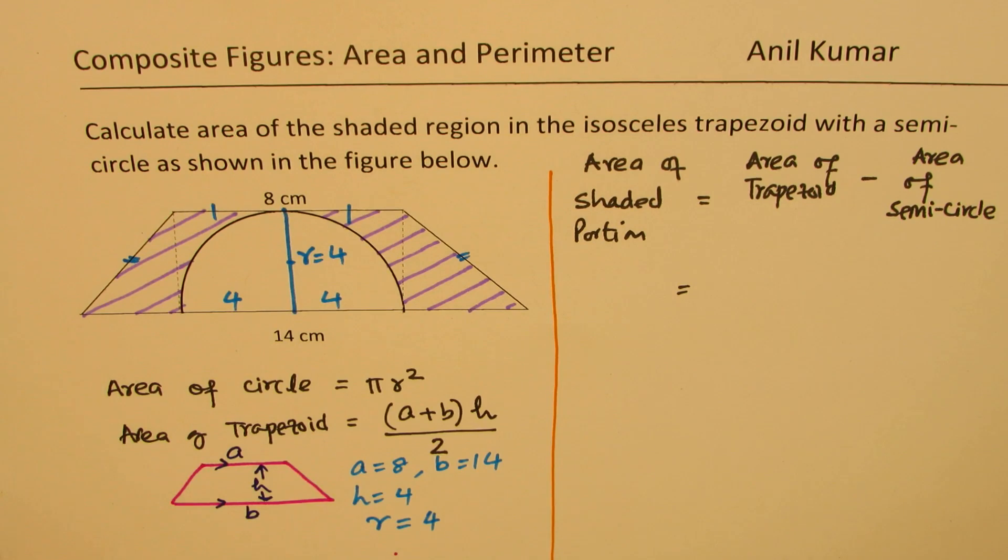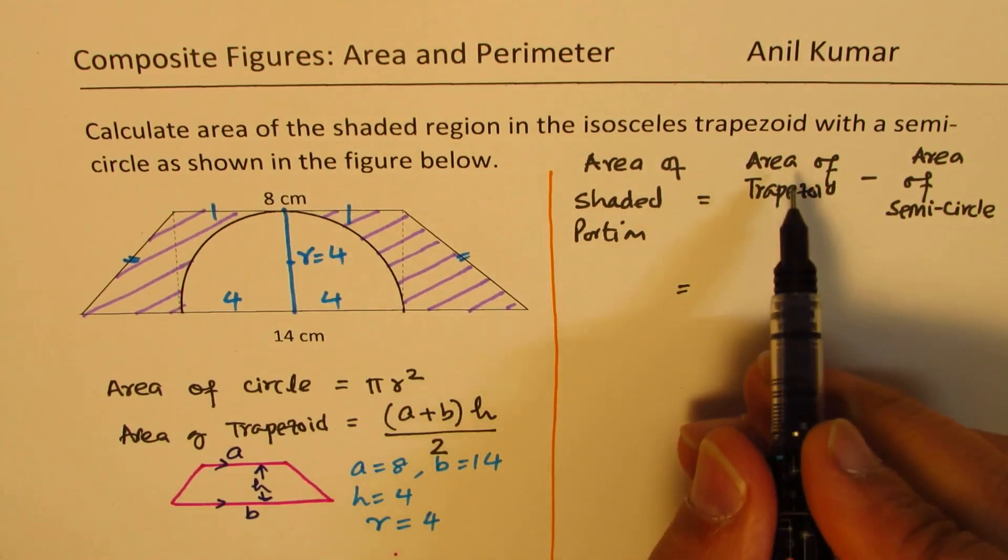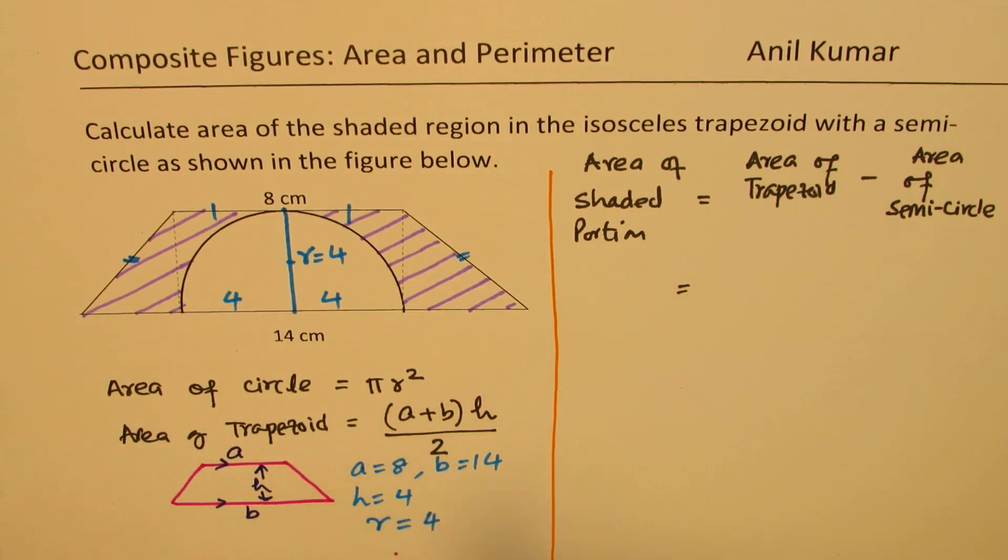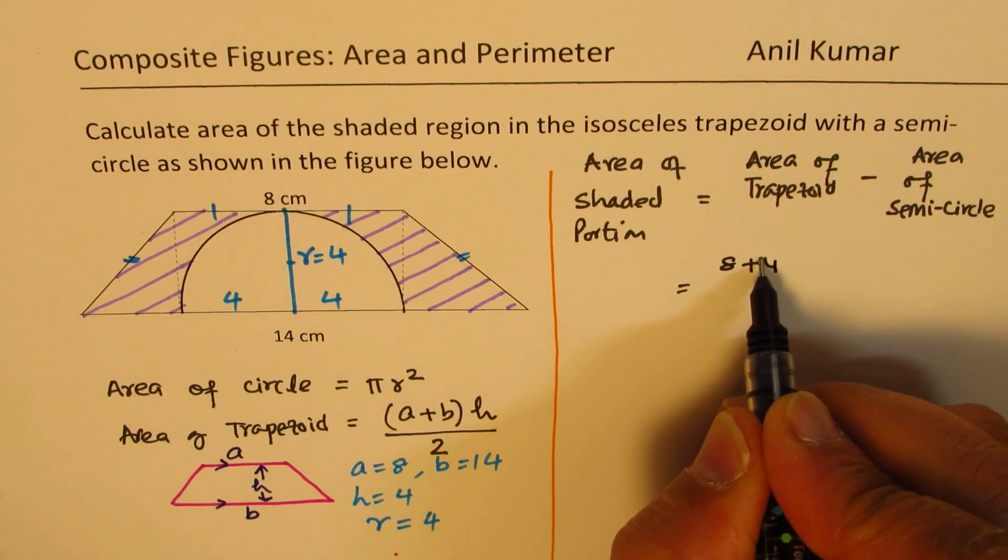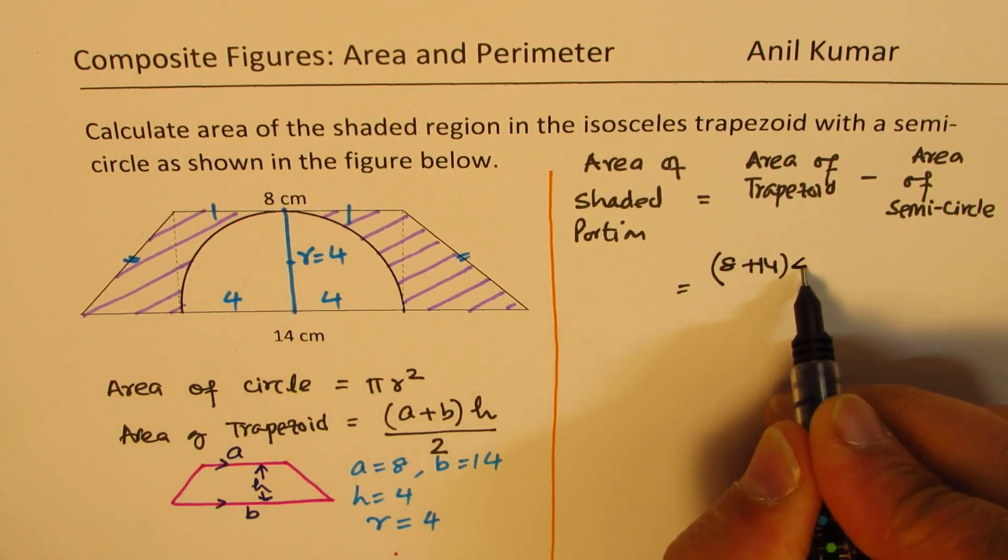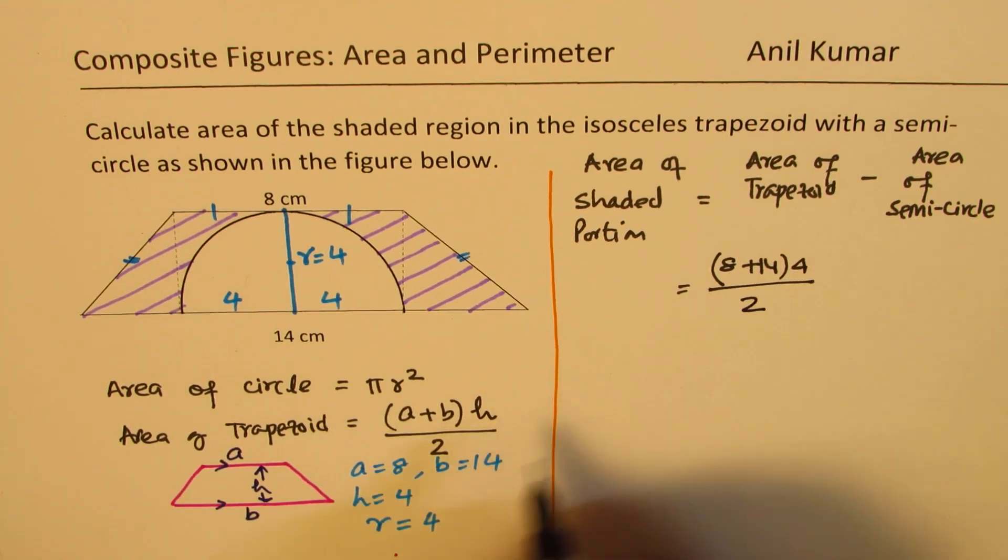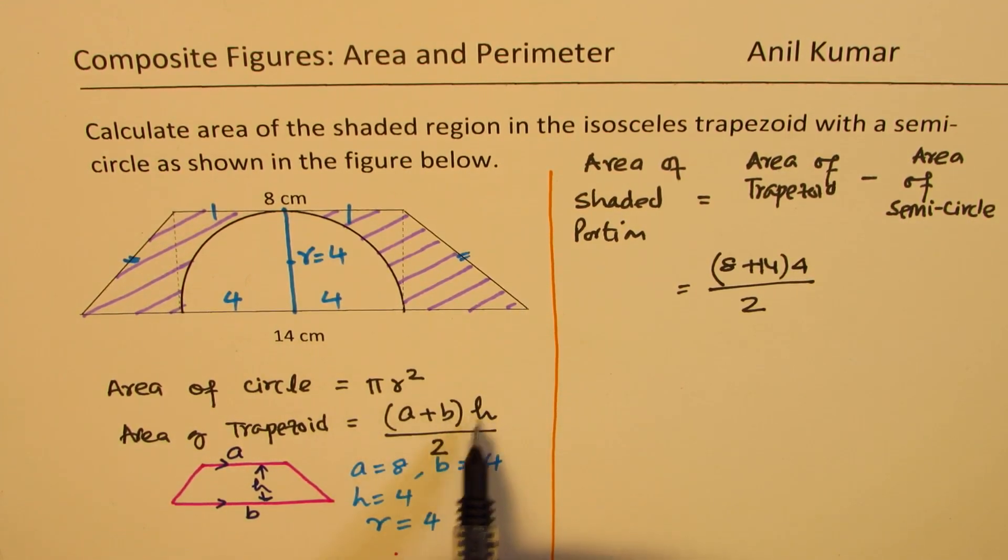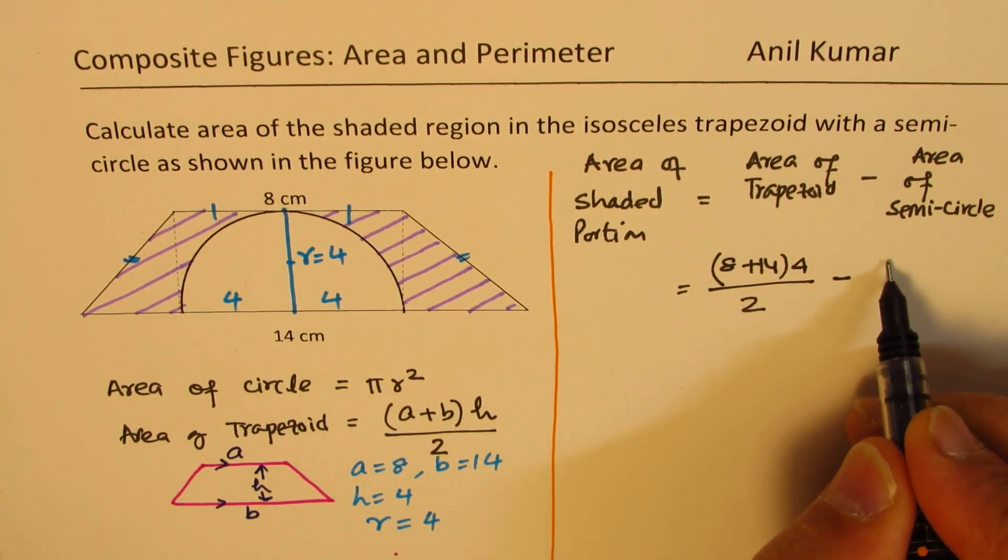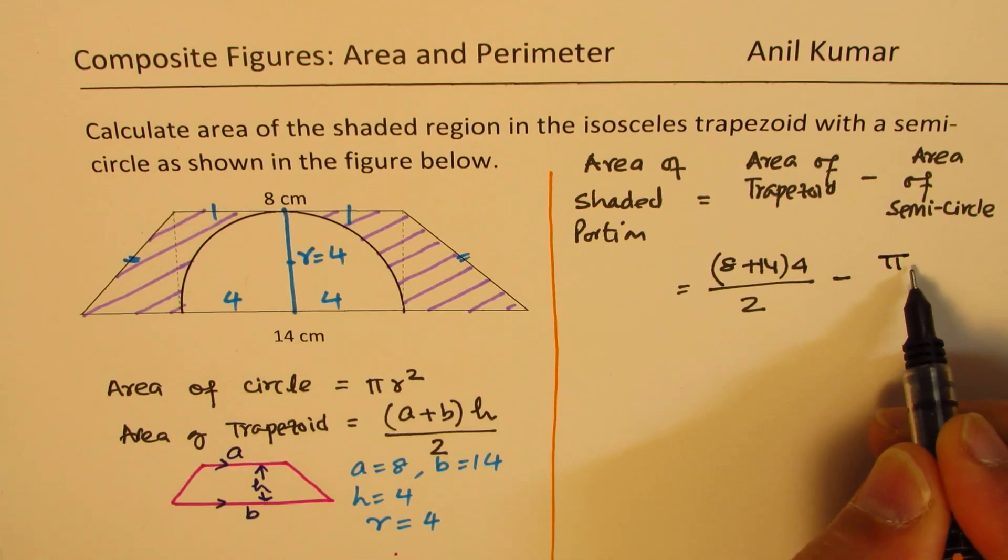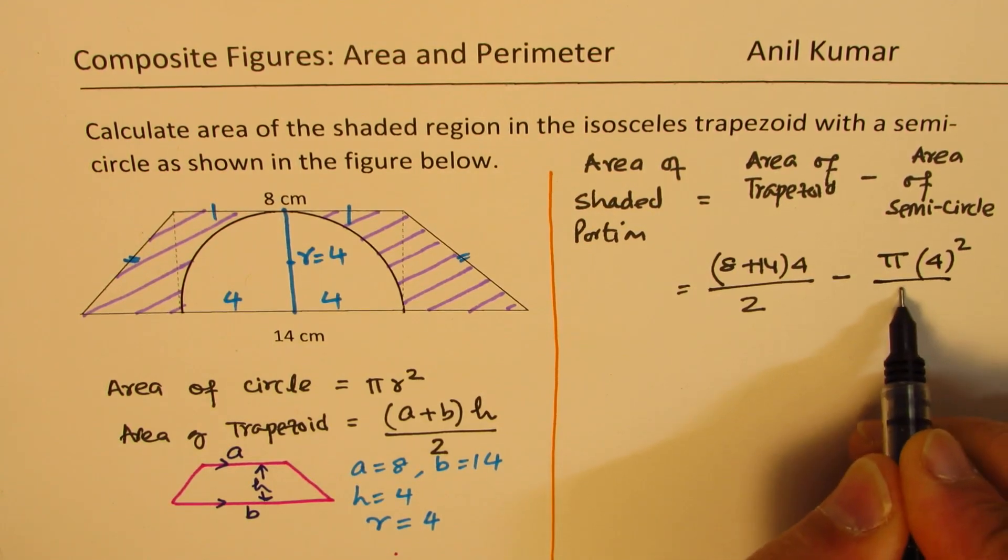So let's use these values. So area of the trapezoid in this case is going to be, we'll use this formula. So 8+14 times 4 divided by 2, right? So we have used this particular formula, (a+b)h/2 minus area of semicircle. Semicircle means π times R², R is 4, divided by 2.